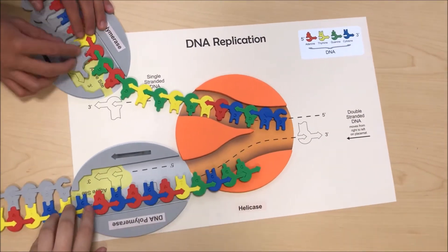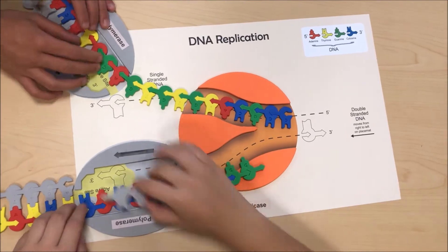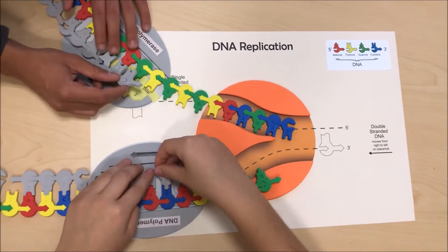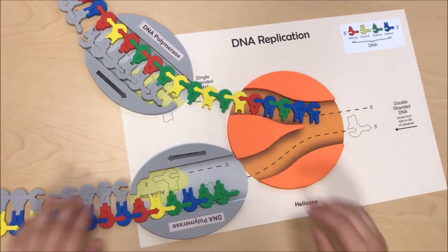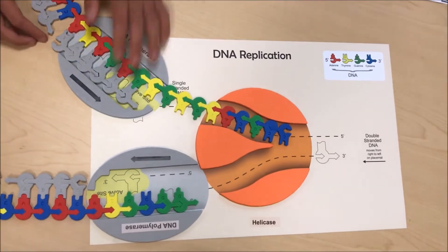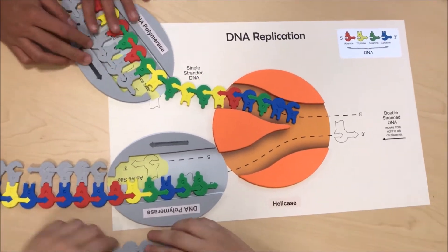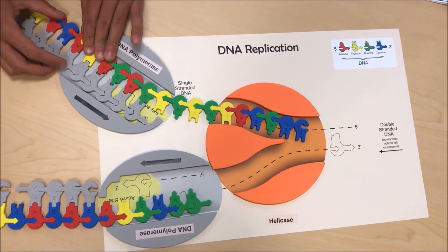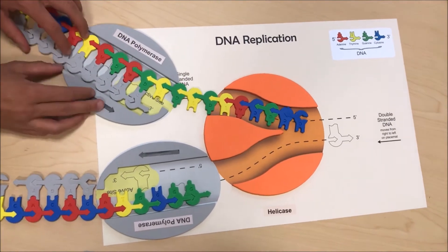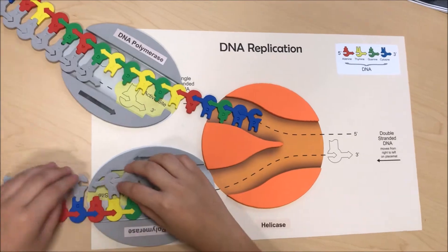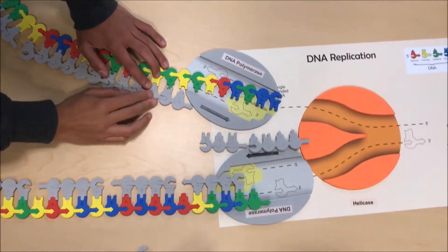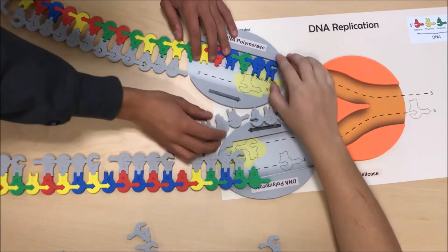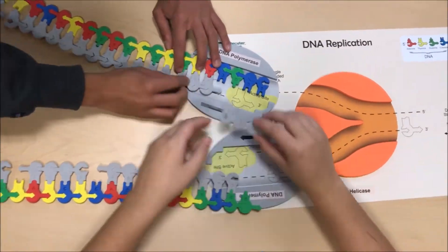DNA polymerase replicates the leading and lagging strands simultaneously. Each nucleotide is then paired with its complementary base pair. In DNA replication, adenine always pairs with thymine and cytosine always pairs with guanine. This models semi-conservative replication because it shows two copies of DNA that each contain one parent strand and one new strand.